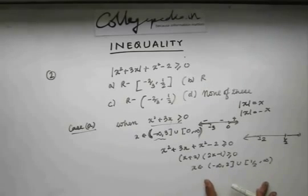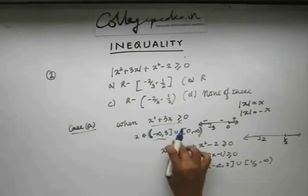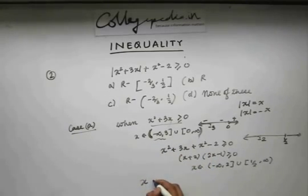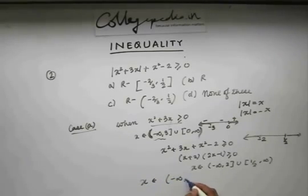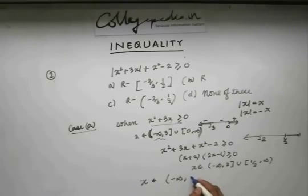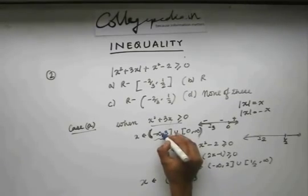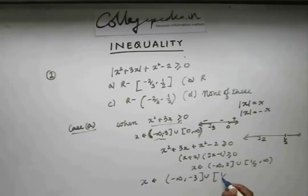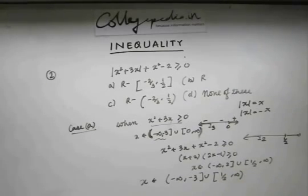We need to take values from this interval that also lie in the interval from Case 1 — we take the intersection. So the answer is x belongs to (−∞, −3) ∪ [1/2, ∞).